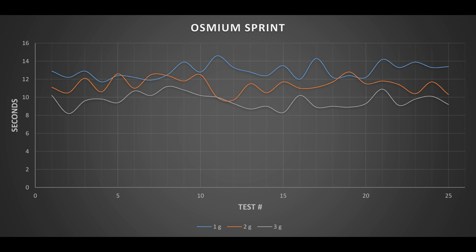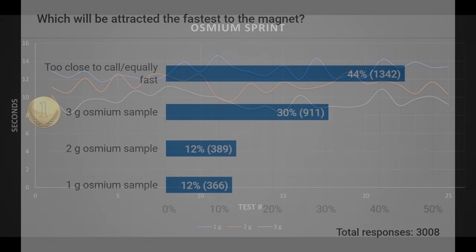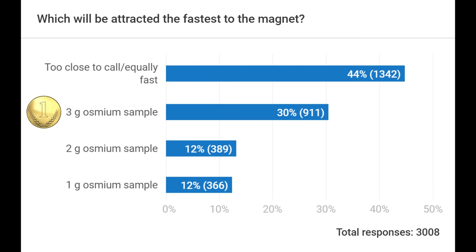Hmm, not what I and most of you expected. The heavier samples are clearly faster with the 3 grams being the fastest. A third of you guessed right in the poll.